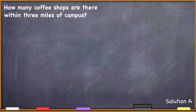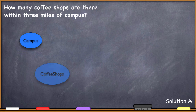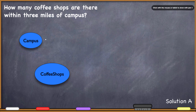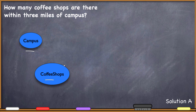So what's the first thing we need to think about when posed this question? The first thing we need to think about is what kind of data are we going to need — what data will be required in order to solve this problem or answer this question. It looks like we're going to need two different files: campus and a data file of coffee shops.